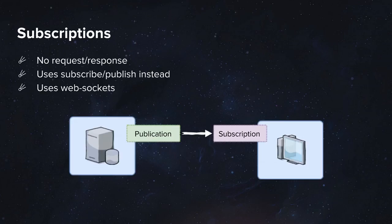For example, if you have a data set of messages, these messages should have a belonging publication defined on the server. Whenever you would like to fetch these messages, you would have to subscribe to the messages publication. And once the subscription is ready, a callback is going to be invoked, meaning that the local data is ready to use. And you can have multiple subscribers subscribing into a single publication.